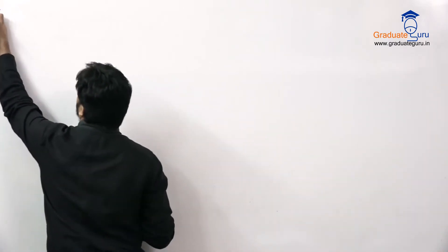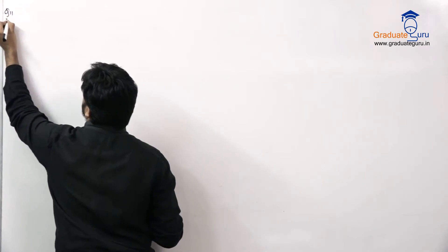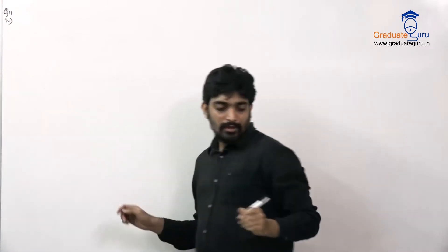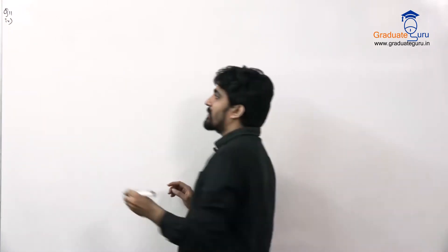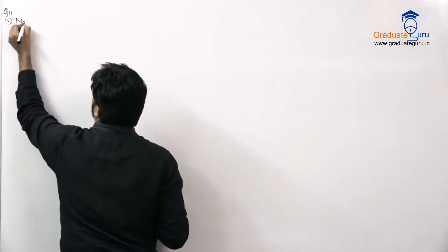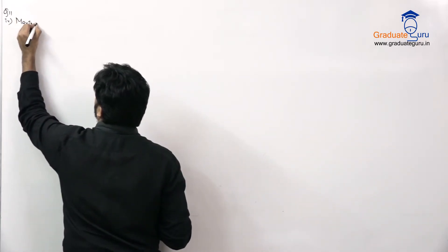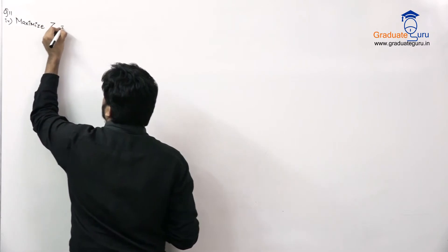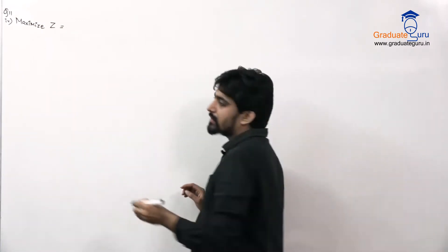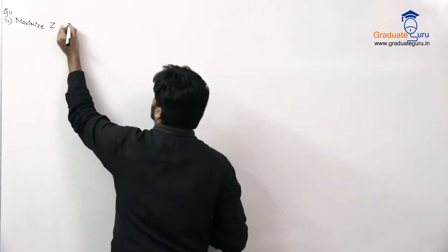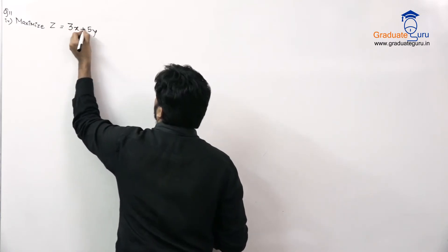So I will write it as question 11, sub question 4. The question is: maximize Z is equal to 3x plus 5y.